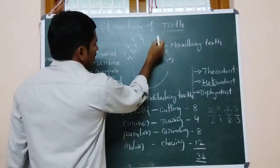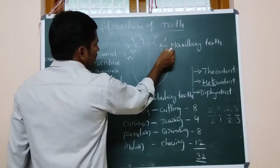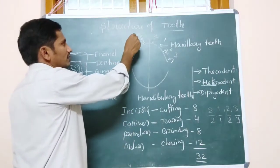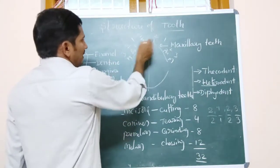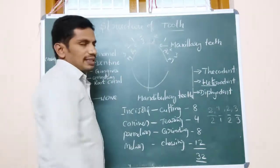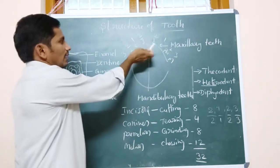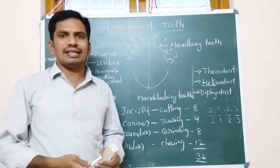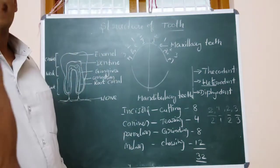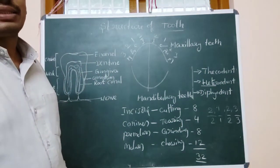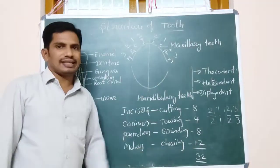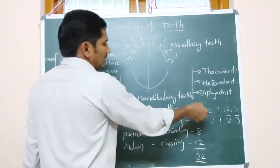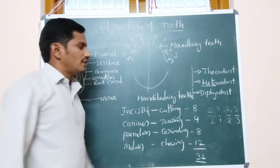The remaining half also has 2, 1, 2, 3. If you calculate: 3 plus 2 plus 1 plus 2 equals 8 in one half; 8 plus 8 equals 16 for the upper jaw. The lower half is also 16. So 16 plus 16 equals 32. This is the dental formula for adults.